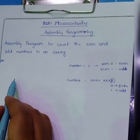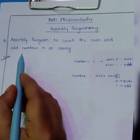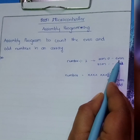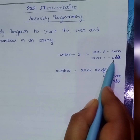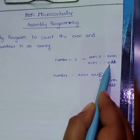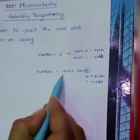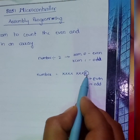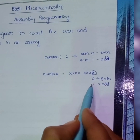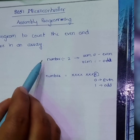Before directly writing the program, we shall analyze how to identify whether a number is odd or even. One approach: a number is divided by 2 — if the remainder is 0, it is even; if the remainder is 1, it is odd. Another logic: if we represent a number in 8 bits, we check the least significant bit. If the LSB is 0, the number is even; if the LSB is 1, the number is odd. We can write the program using either of these two approaches.